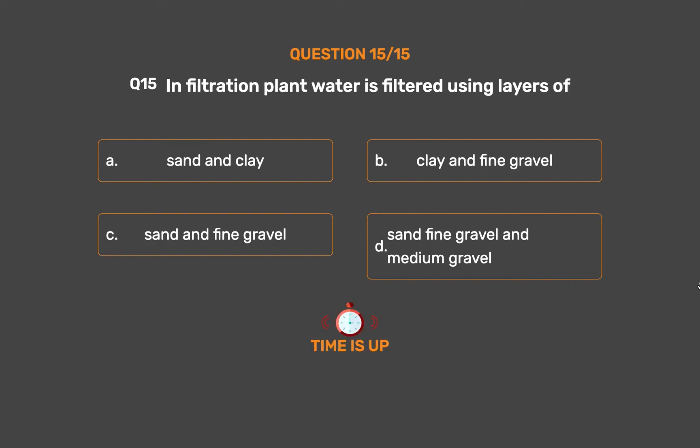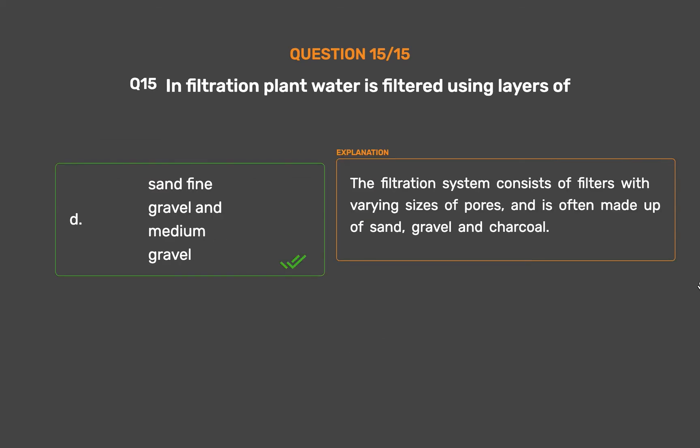The correct answer is Option D: Sand, Fine Gravel and Medium Gravel. The filtration system consists of filters with varying sizes of pores and is often made up of sand, gravel and charcoal.